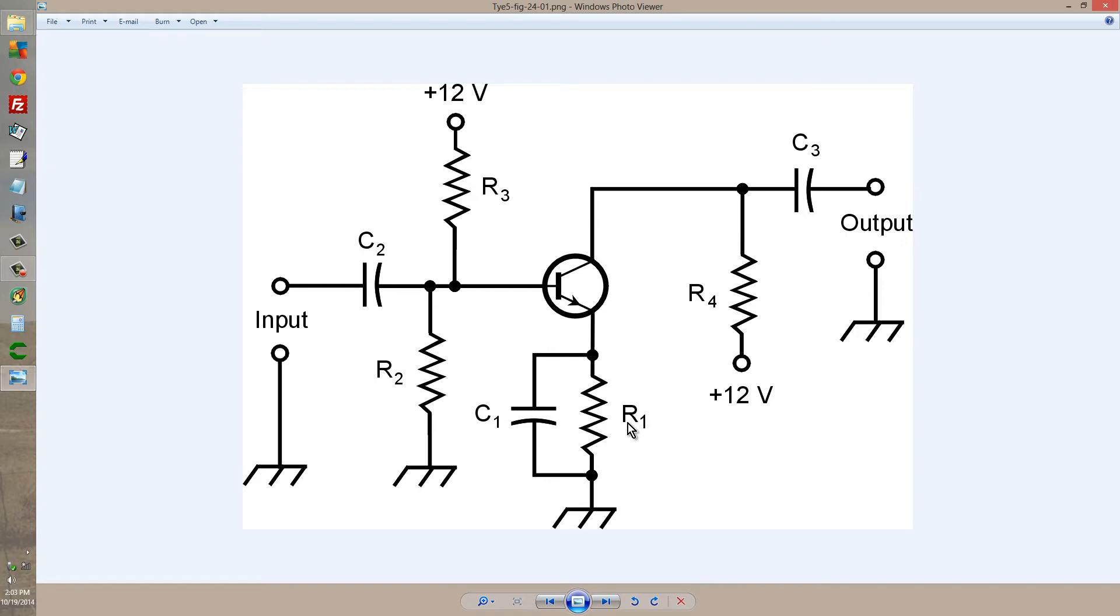C1 and R1 also help to bias the transistor for Class A. C1 ensures that the emitter remains at signal ground.